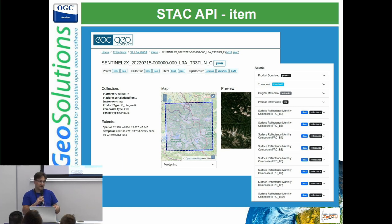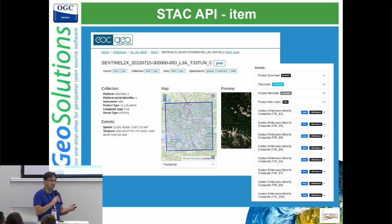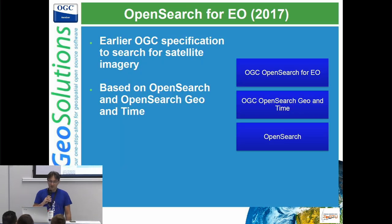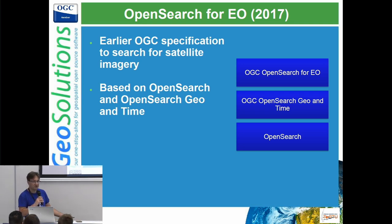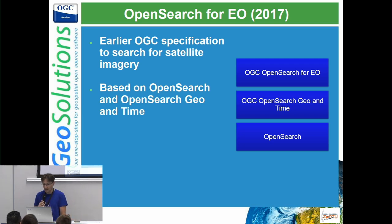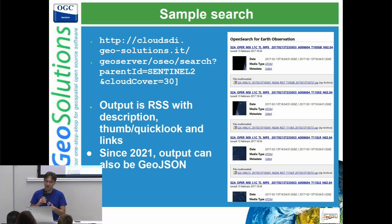Each resource is also represented as a JSON resource for machine-to-machine communication, and the JSON resource can be customized through template mechanisms. In addition, we also have OpenSearch4EO, which is an older OGC specification to do exactly the same. It was based on RSS rather than GeoJSON, and provides more or less the same principles and functionality. One example of a search: filter for Sentinel-2 data with cloud cover less than 30%, and the output is typically RSS.